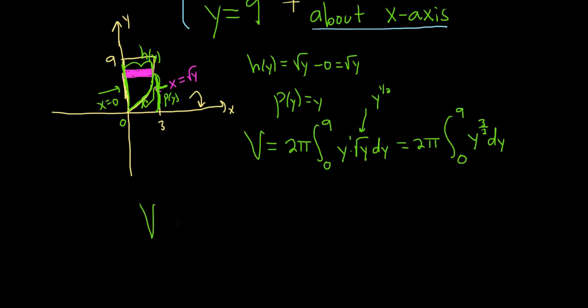So the volume is equal to 2 pi. Let's go ahead and integrate. We can use the power rule. So adding 1, we'll get 1 plus 3 halves. So that's 2 halves plus 3 halves. So that's 5 halves. And when we divide by 5 halves, we really multiply by 2 fifths. And then we're going from 0 to 9.